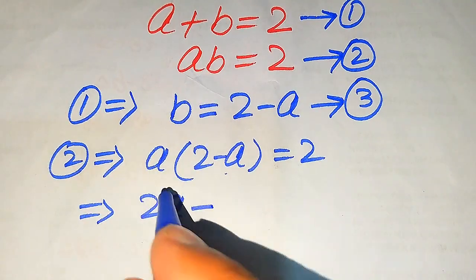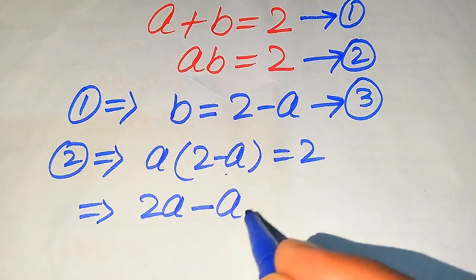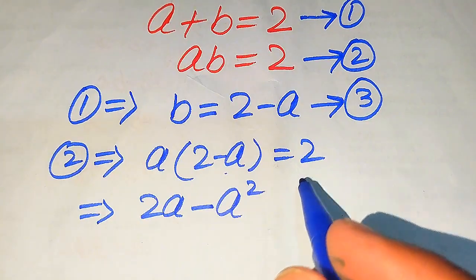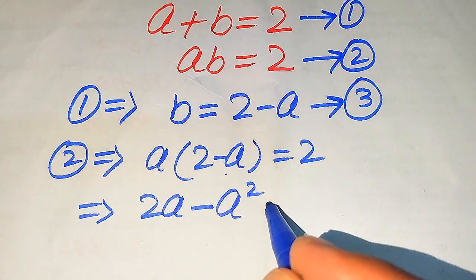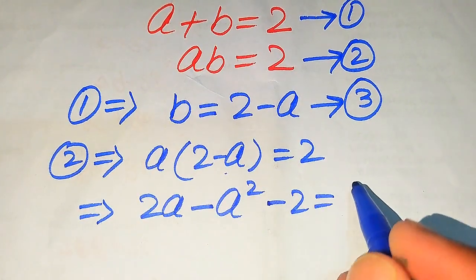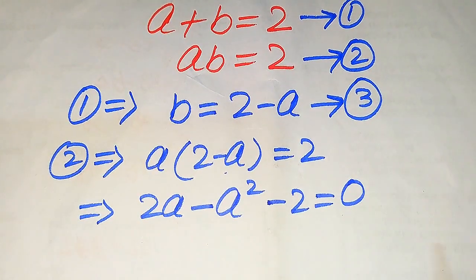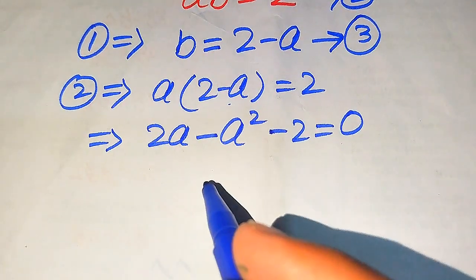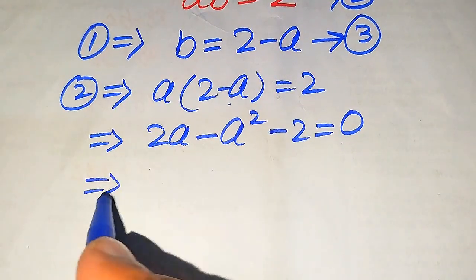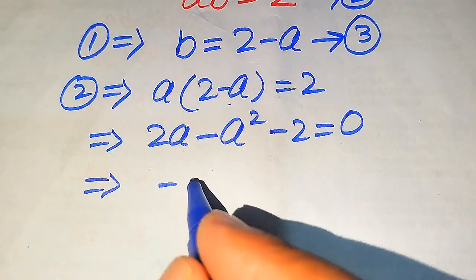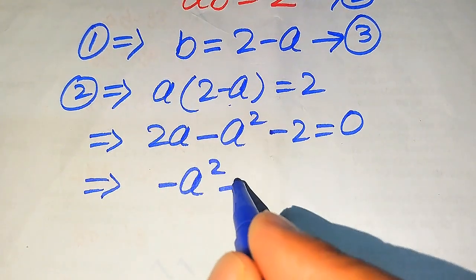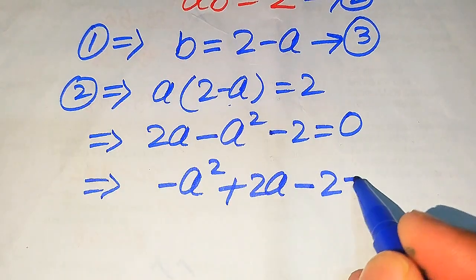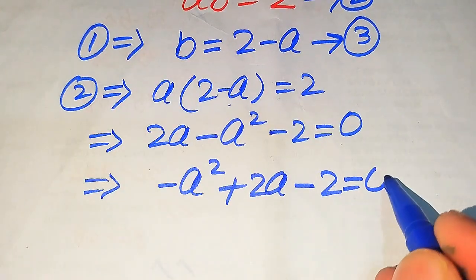We multiply a through both terms to get 2a minus a squared equals 2. Moving 2 to the left-hand side gives minus 2, so the equation becomes 2a minus a squared minus 2 equals 0. We then rearrange the terms, writing the squared term first: minus a squared plus 2a minus 2 equals 0.